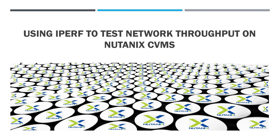Welcome and thanks for taking the time to view this video, which will be demonstrating the use of Iperf version 1 to test network bandwidth and throughput using Nutanix CVMs, which are based on Red Hat CentOS. While this video uses Nutanix CVMs, the method used in this video could equally be used in a non-Nutanix CVM environment. Iperf version 1 is already installed on the CVMs and doesn't require a separate download on the CVMs themselves. However, you may need to download Iperf if you intend to perform the test using an external node such as Windows, Linux, or other client.